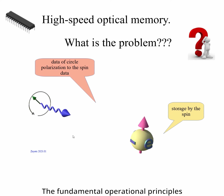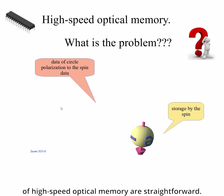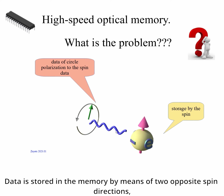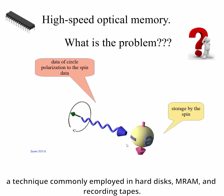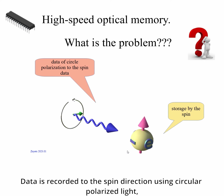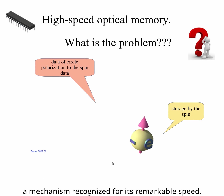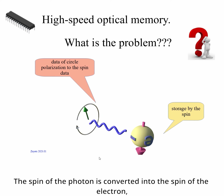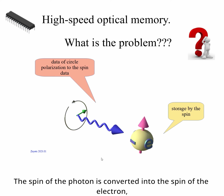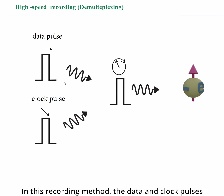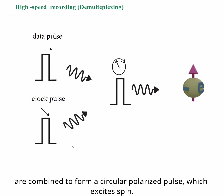The fundamental operational principles of high-speed optical memory are straightforward. Data is stored in the memory by means of two opposite spin directions, a technique commonly employed in hard disks, cameras, and recording tapes. Data is recorded to the spin direction using circularly polarized light, a mechanism recognized for its remarkable speed. The spin of the photon is converted into the spin of the electron, facilitating the recording of data.